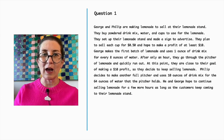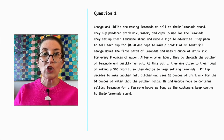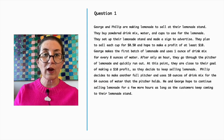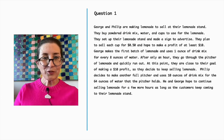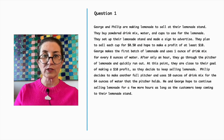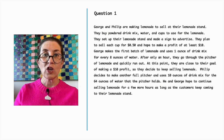They plan to sell each cup for 50 cents and hope to make a profit of at least $10. George makes the first batch of lemonade and uses one ounce of drink mix for every eight ounces of water. After only an hour, they go through the pitcher of lemonade and quickly run out. At this point, they are close to their goal of making a $10 profit, so they decide to keep selling lemonade.